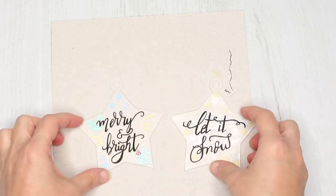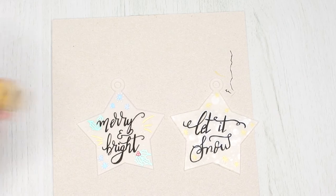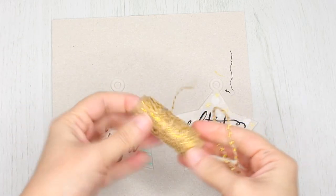So these are the two baubles. Now for the hanging I used a bit of Christmassy twine.